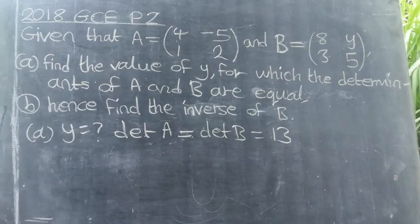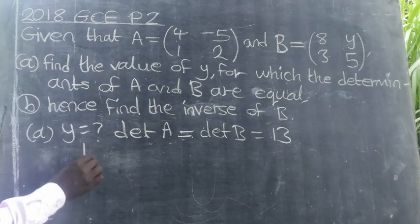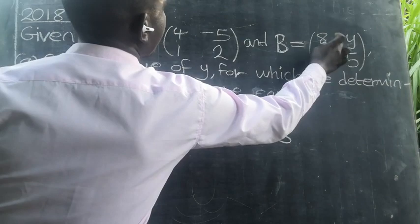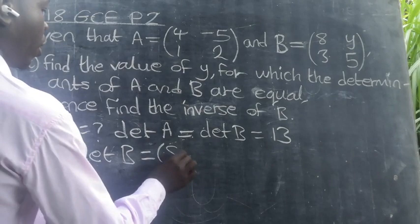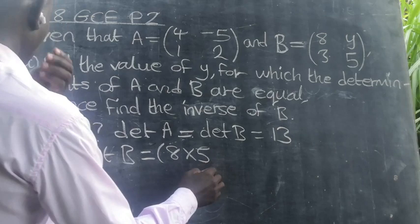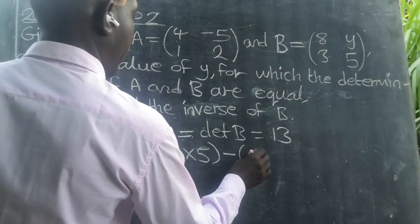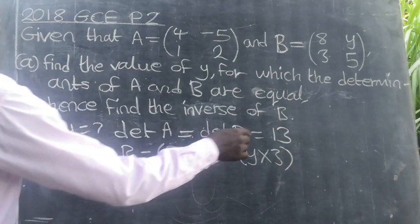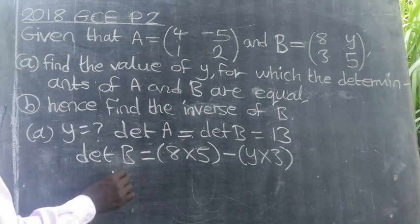Now we write an expression for the determinant of matrix B. The determinant of matrix B equals the major diagonal minus the minor diagonal. The major diagonal is 8 times 5, and the minor diagonal is 3 times Y. So that is 8 times 5 minus Y times 3. Since the determinant of matrix B equals 13, we replace it with 13.